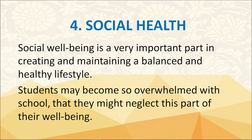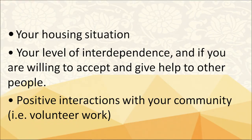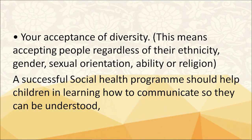The fourth aspect is social health. Social well-being is a very important part in creating and maintaining a balanced and healthy lifestyle. Students may become so overwhelmed with school that they might neglect this part of their well-being. Components of social wellness include caring and healthy relationships, your social network, your level of safety, your housing situation, your level of interdependence, and willingness to accept and give help to others.